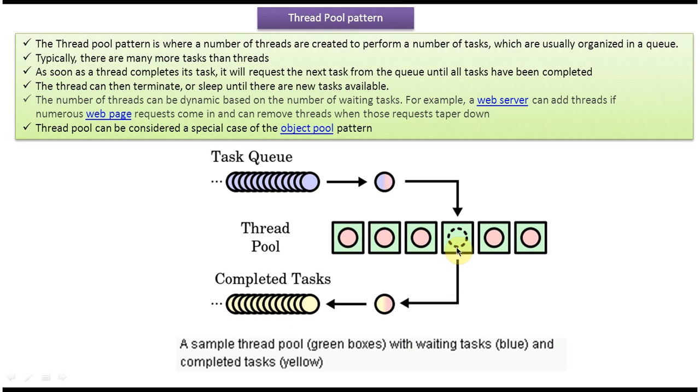So the Thread again will pick some task from the Task Queue and perform the task. Until the Task Queue is empty, the Thread in the ThreadPool will do that work.